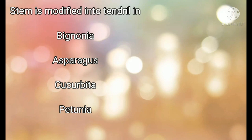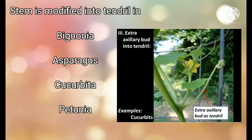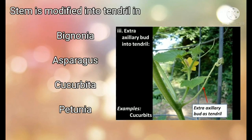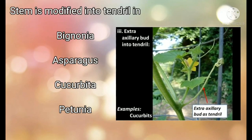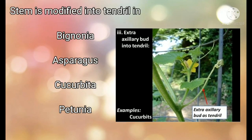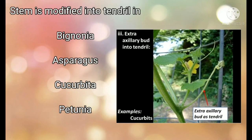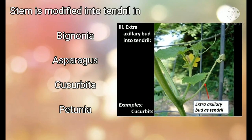Stem is modified into tendrils in which plant? Options: Bignonia, Asparagus, Cucurbit, and Petunia. The right answer is Cucurbit. In the cucurbit plant, which is a gourd plant, we can see the extra axillary bud. These buds are modified into tendrils. You can see in this diagram the extra axillary bud acting as tendrils.